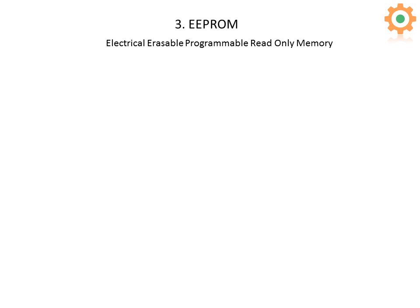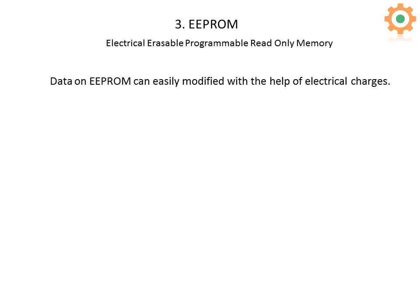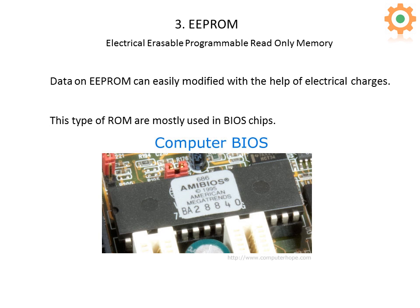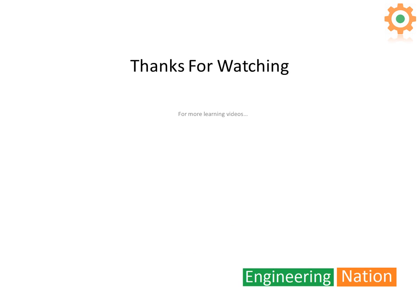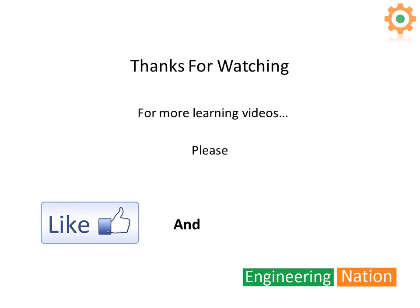The third type is EEPROM: Electrically Erasable Programmable Read Only Memory. Data on EEPROM can be easily modified with the help of electrical charges only — there is no requirement for UV light to delete the data. This type of ROM is mostly used in the BIOS chip. This is a BIOS chip used in a computer.